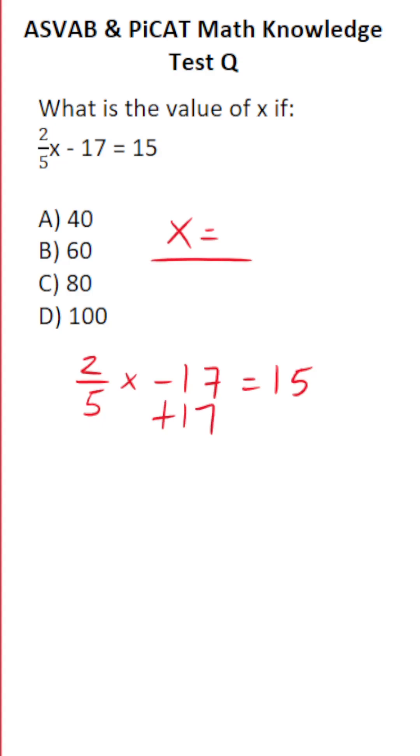So the first thing we're going to do is add 17 to both sides of the equation. This crosses out, leaving you with two-fifths x over here.